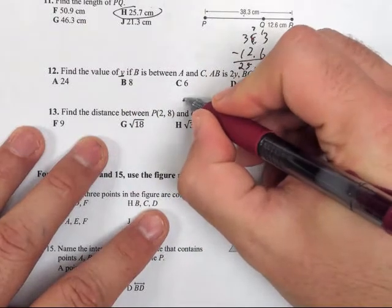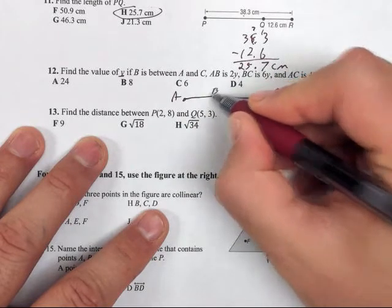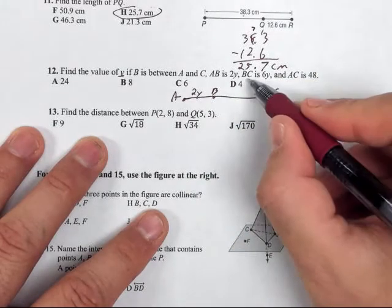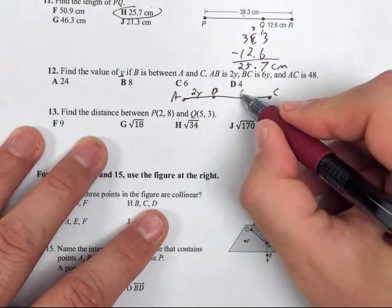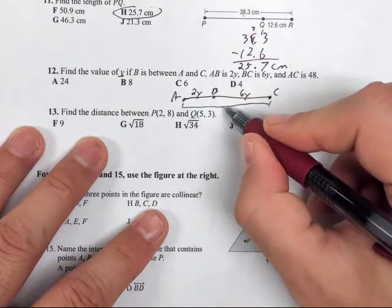So I'm going to go ahead and draw my picture here. B is between A and C. AB is 2Y, BC is 6Y, and AC, the whole distance, is 48.